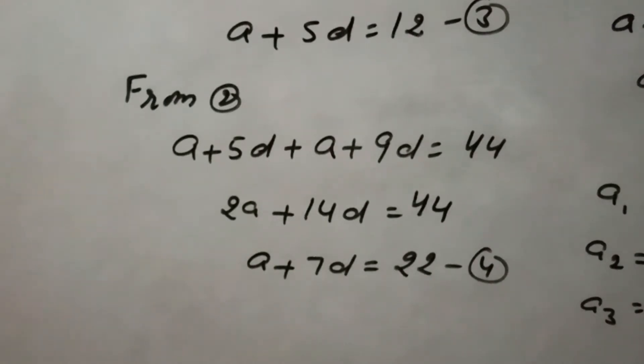Similarly, for expanding second equation, A6 is A plus 5D, A10 is A plus 9D equals 44. A plus A, 2A plus 14D equals 44. So A plus 7D equals 22.